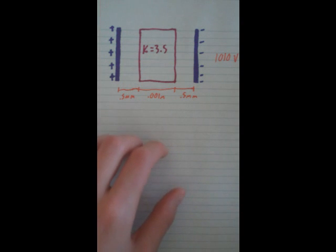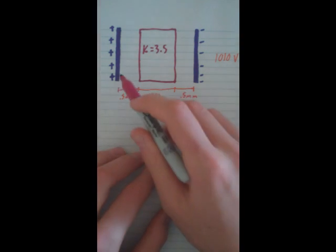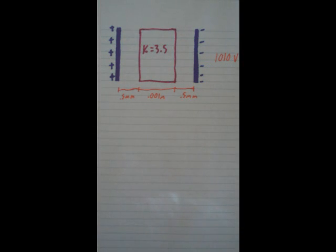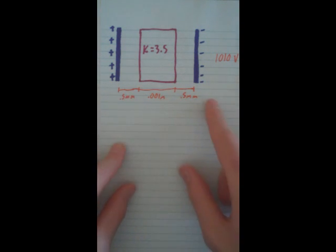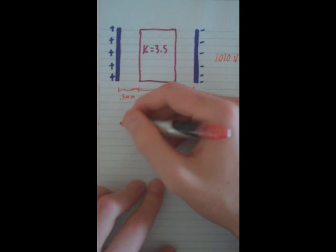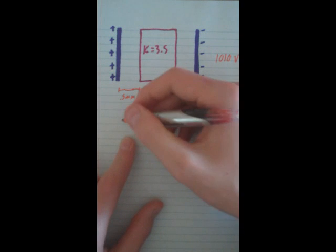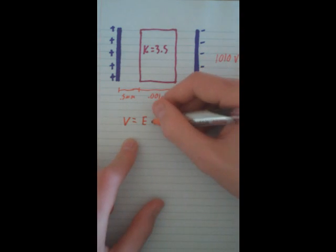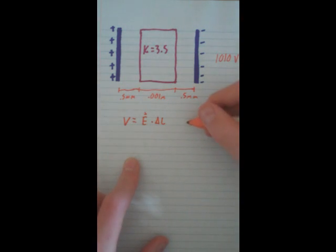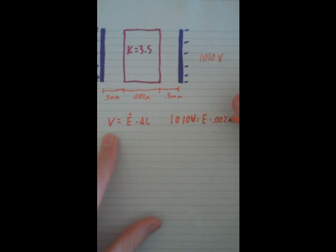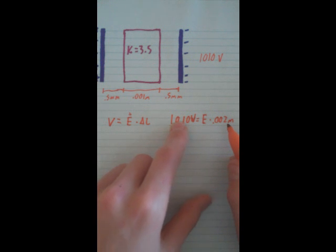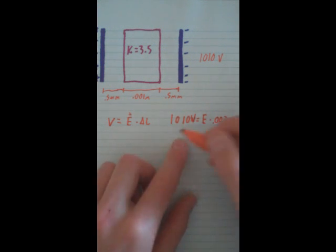What we want to figure out is the new potential difference. To do that we have to figure out the electric fields of all these areas. Before the insulator was put in there, to figure out the electric field for these two areas, we use volts equals E field times delta L. So originally: 1010 volts equals E times 0.002 meters. You just take 1010 and divide by 0.002, and that gives us our E.